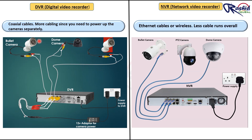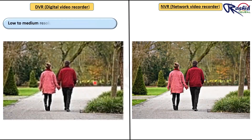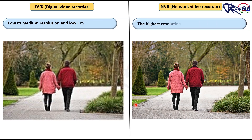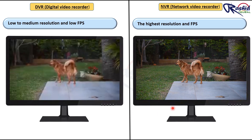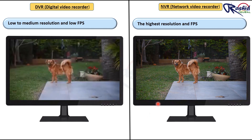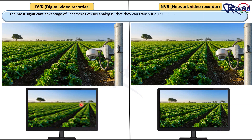Coaxial cables are wider in diameter compared to Ethernet cables used with NVR systems, which can make it more complicated to run cables in relatively tight spaces. DVR analog systems use lower-resolution cameras, although some brands have manufactured 4K camera systems. Since coaxial cable is used in DVR systems, interference, rolling lines, and other issues are more likely to occur in the image. DVR systems can also capture audio without the need for standalone devices.